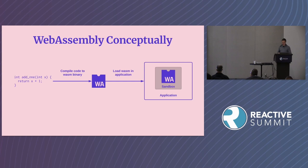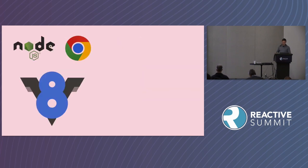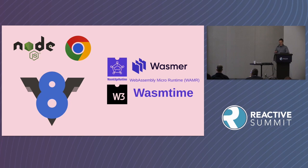Conceptually, WebAssembly works like this: you take code in your language of choice, compile it to a WebAssembly binary, and then load that binary into a sandbox running in an application. The application may be in a browser or outside of a browser. V8 is the high-performance JavaScript and WebAssembly engine used by Chrome and Node.js. But there are also all sorts of host runtimes, some of which can run on constrained devices like IoT devices.